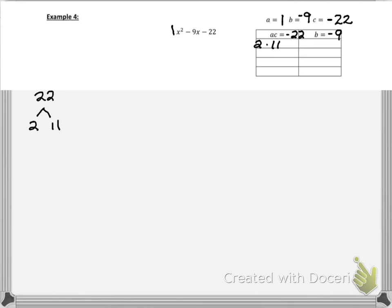But remember, since this whole number is negative, one of the two terms has to be negative. So let's make the 2 negative. So then we have negative 2 plus 11. Well, that gives us positive 9. So this answer is not going to work.